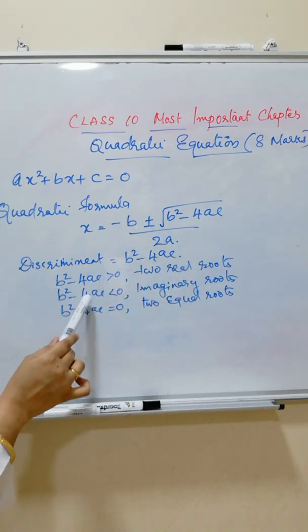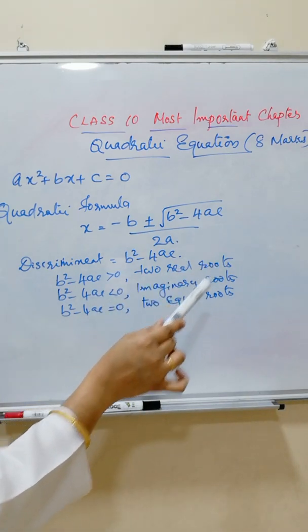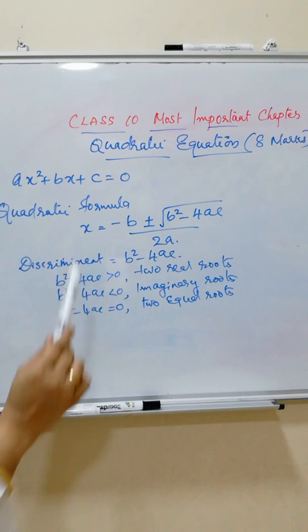If b square minus 4ac is less than 0, there are imaginary roots. That means negative values, that means imaginary roots.